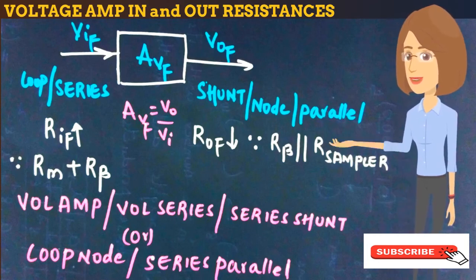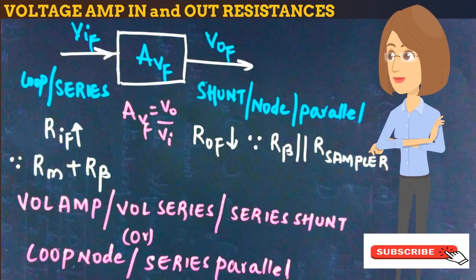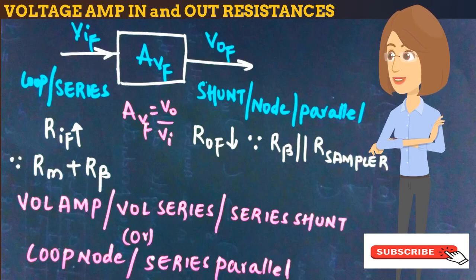The voltage amplifier, also called the voltage series or series-shunt amplifier, has voltage as both its output and input signal. Since the input uses a series connection between the mixer and feedback network, the input resistance increases. Since the connection at the output between sampler and feedback network is parallel, the output resistance of a voltage amplifier decreases because resistance in parallel decreases.